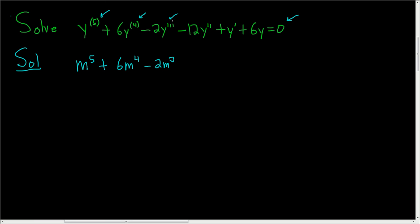And then m cubed, that's because we have a third derivative, minus 12. Looks like the second derivative is going to go here. Here we have the first derivative, so we have m, and then here there is just a y, so we put a 6.